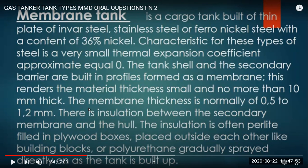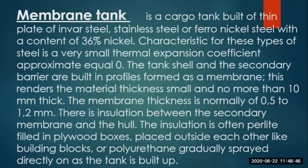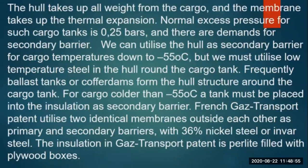The membrane thickness is normally 0.5 to 1.2 mm - the 10 mm total including the shell and secondary barrier both. There is insulation in between the two layers, and between the secondary membrane and the hull we also put insulation. The insulation is often perlite - placed in plywood boxes like building blocks - or polyurethane foam, which is gradually spread in the space outside the secondary hull as the tank is built up.